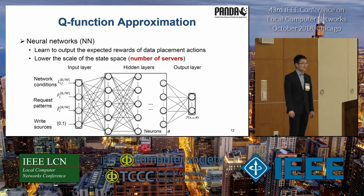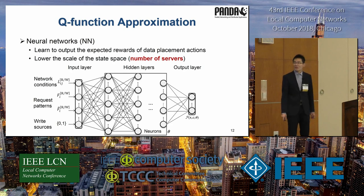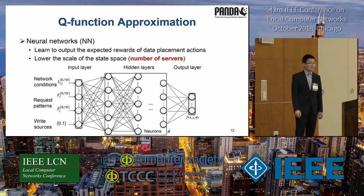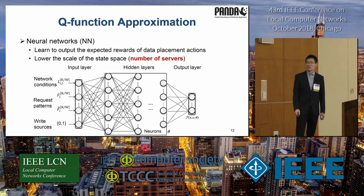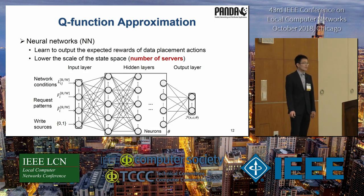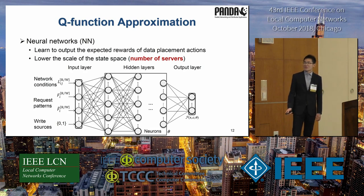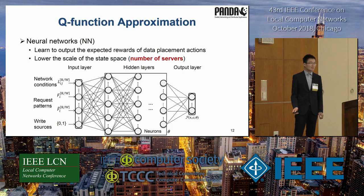We show how to reduce the size of state space caused by the number of deployed servers. For Q-function approximation, a neural network is maintained in our system. Given state information — network conditions, user request patterns, and write sources as input — and the reward of Q-learning as output, the neural network updates the weights of connections between layers of neurons. Through training, the neural network learns the expected reward of data placement actions with high efficiency and accuracy for quick decisions. However, conventional neural networks are slow to train, though fast to make decisions. The main objective is to make instantaneous data placement decisions, so we have a parallel and synchronized design.